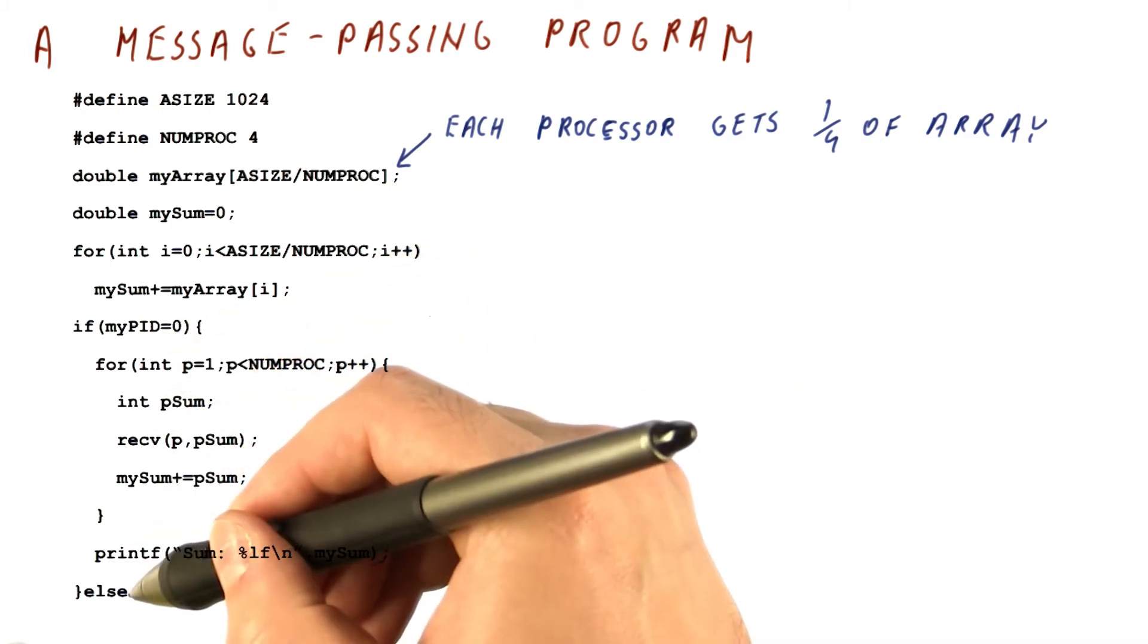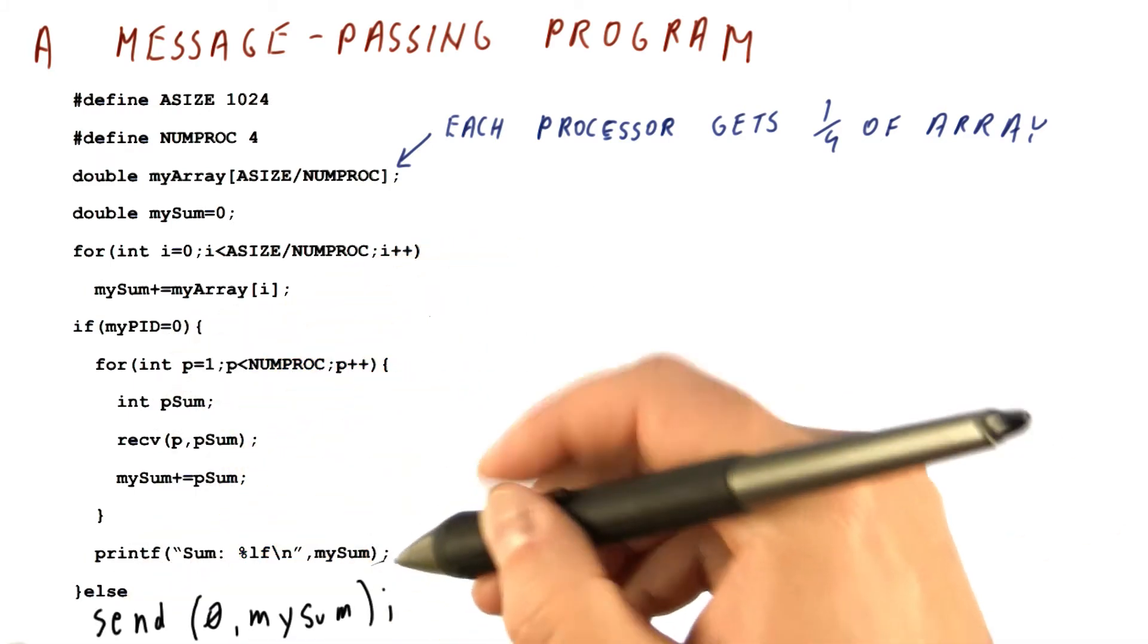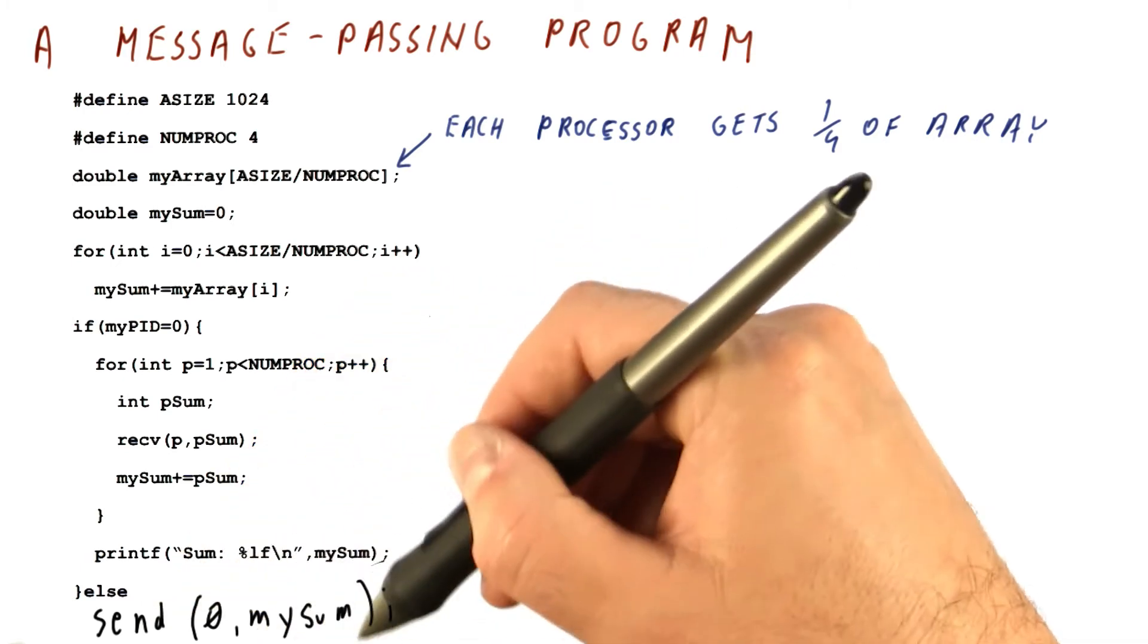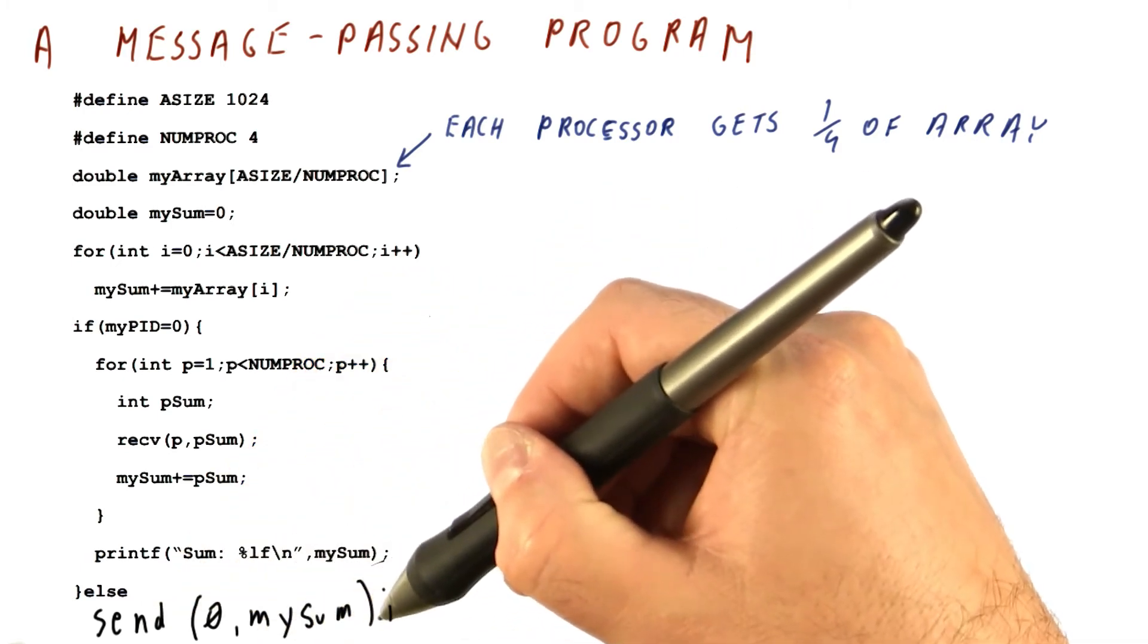What do the rest of the processors do? Well, what they do is they send to processor zero what they have collected so far, and that's all they do.